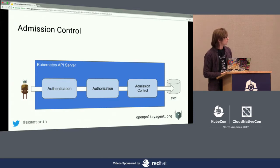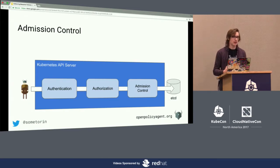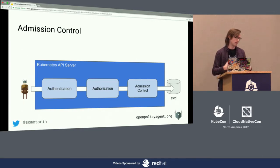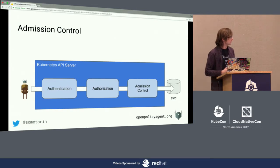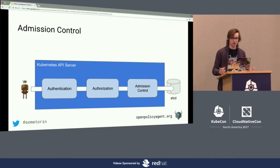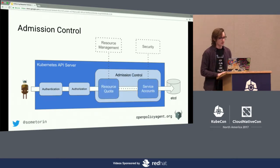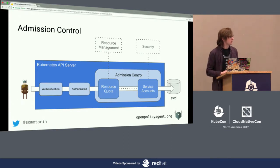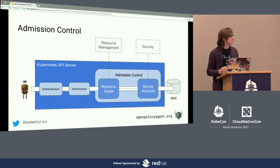For people that don't know about admission control already: it's the stage that runs whenever requests are received by the API server. After a request is authenticated — for example, when Bob runs kubectl exec — that request is sent to the API server, it has to be authenticated, it has to be authorized using role-based access control, and then it has to pass through a series of admission controllers that decide what to do with it.